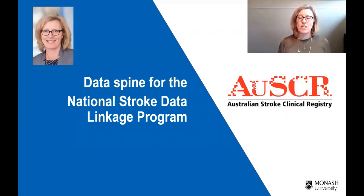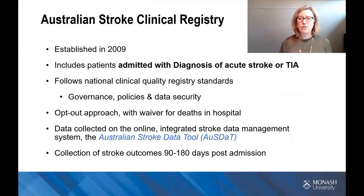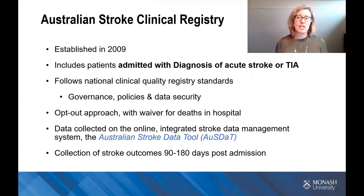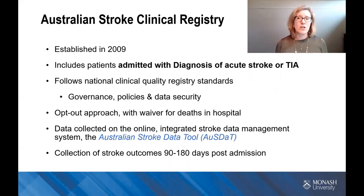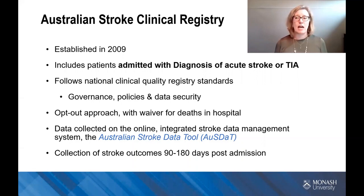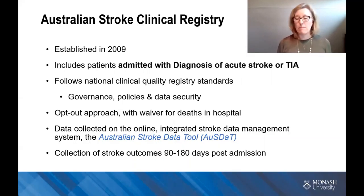The data spine for the National Stroke Data Linkage Program is the Australian Stroke Clinical Registry. This registry was set up over 10 years ago in 2009 and collects information on patients with stroke, either ischemic stroke or hemorrhagic stroke, as well as transient ischemic attack. This registry collects information not only on process of care, whether a patient was treated in a stroke unit, received a clot-busting drug, or discharged on appropriate medications, but it also includes information on outcomes, as well as 90 to 180 day outcomes. This registry follows National Clinical Quality Registry standards.